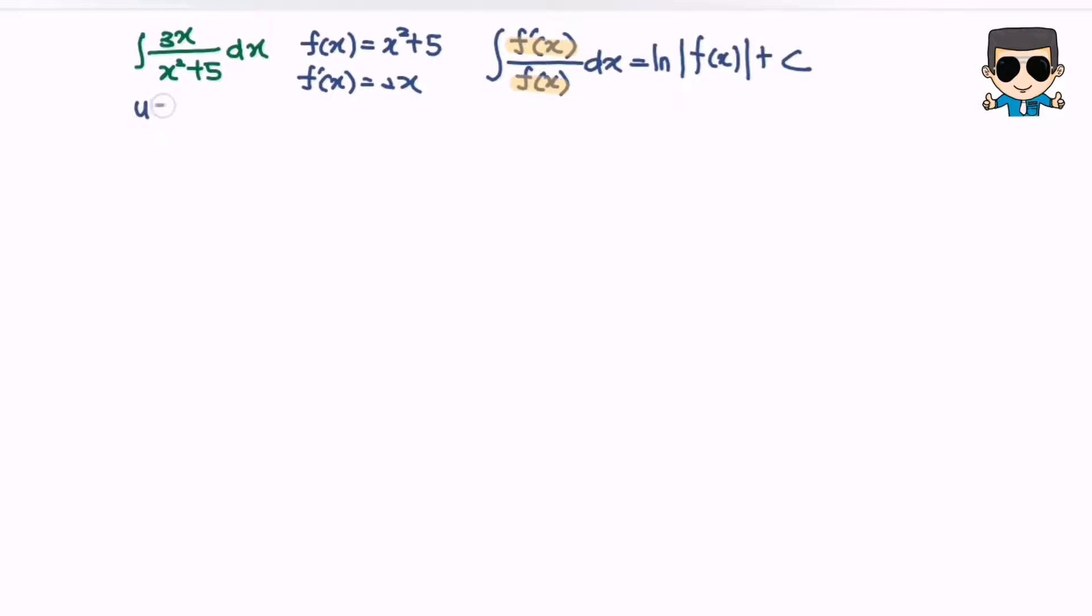Let u equal x squared plus 5. Differentiate with respect to x and we will have 2x. Then make sure the situation matches, meaning that we have x multiplied with dx. So rewrite the situation: du over 2 equals x dx. So now we are going to substitute.